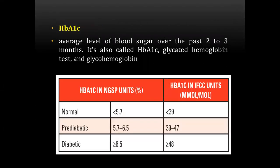The next question was about the diagnosis of diabetes. The HbA1c test measures the average blood sugar level over the past two to three months and is also called the glycated hemoglobin test or glycohemoglobin. The normal range of HbA1c is less than 5.7%; in pre-diabetics it is 5.7 to 6.5%; and in diabetic patients it is more than 6.5%.